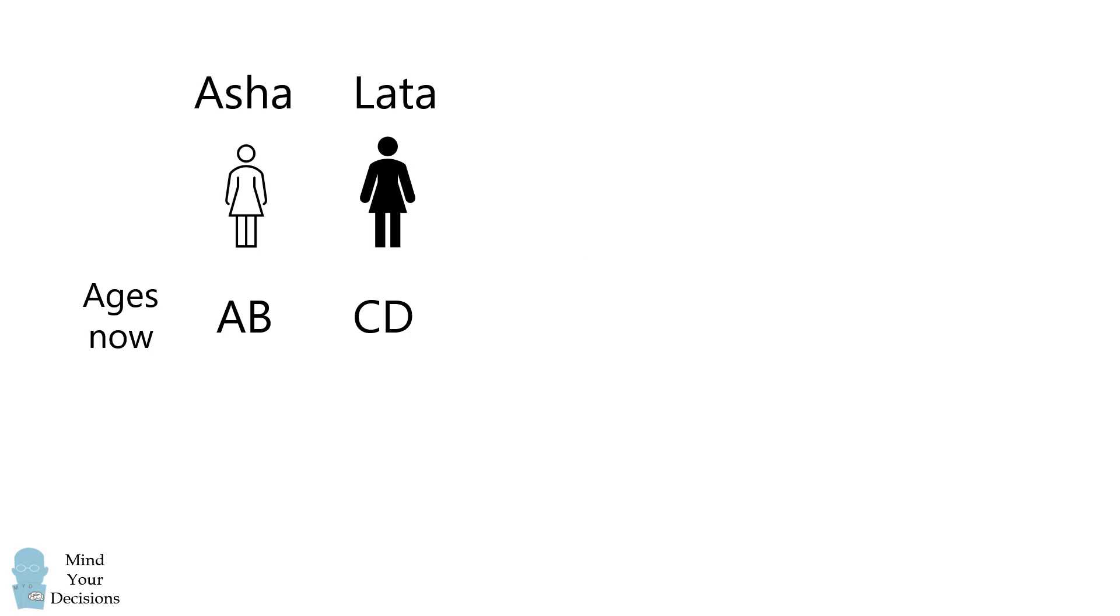Now, we have the ages AB and CD, and we know that ABCD is equal to a perfect square, so we'll write it as equal to y squared for some integer y. In 11 years, Asha's age will be AB plus 11, and Lata's age will be CD plus 11.